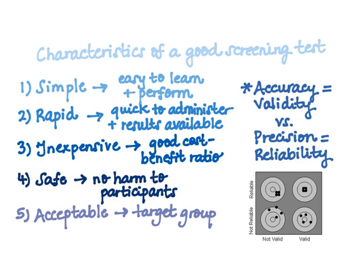In this image we can compare and contrast different examples of reliability versus validity. If a test is reliable or precise, this means that multiple rounds are going to yield very similar results — whether these results be true or false, they'll all be similar in value. Whereas if a test is accurate or valid, a series of results will yield the truest values, or the most accurate values of that screening test.